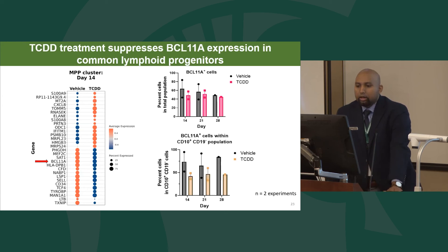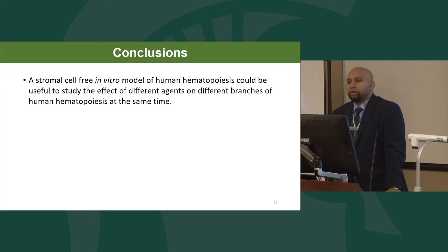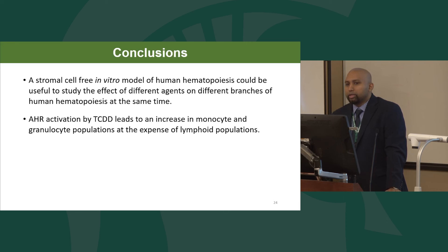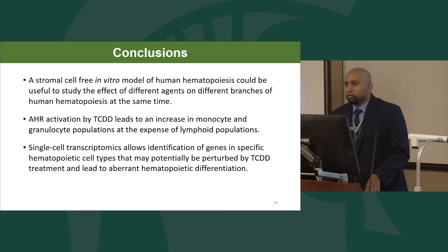In conclusion, the model we have in place is a stromal cell-free system that can support the formation of different hematopoietic cell types, which is useful from an immunotoxicology perspective — we can apply different immunotoxicants and observe effects on different hematopoietic lineages simultaneously within a single system. We showed that AHR activation by TCDD leads to an increase in monocyte and granulocyte populations at the expense of lymphoid populations. With single cell transcriptomics, we could identify specific cell populations, determine which genes are perturbed by treatment, and identify potential genes such as BCL11A that might explain the perturbation of hematopoiesis observed with TCDD.